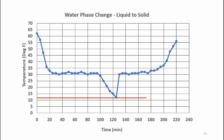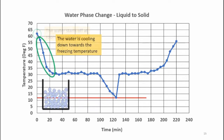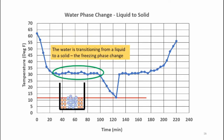Here's the data I collected from the freezing experiment. When I placed the water in the freezer, it was at room temperature, as shown here. For the first 20 minutes or so, the temperature of the water dropped, but the water was still in its liquid phase. In about 25 minutes or so, the temperature of the water reached 32 degrees and remained constant.